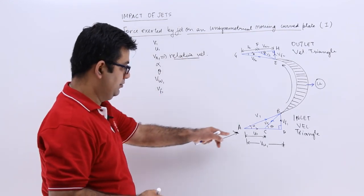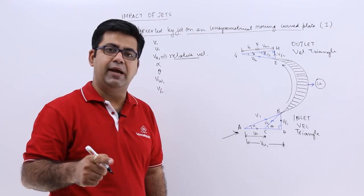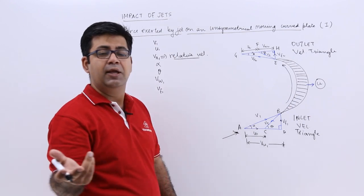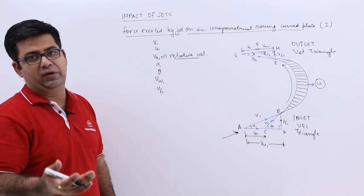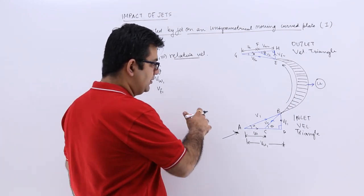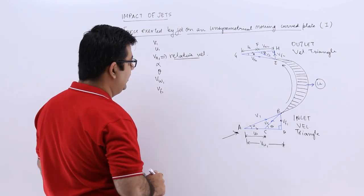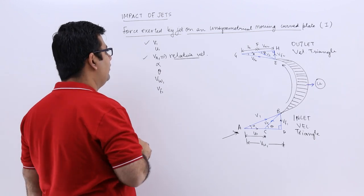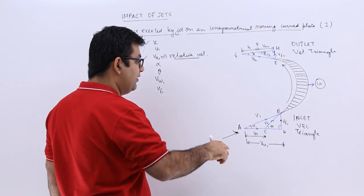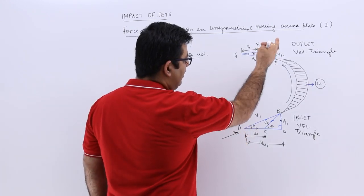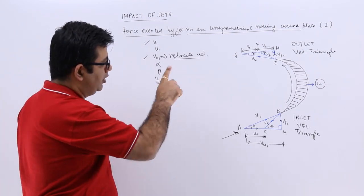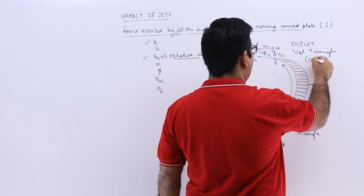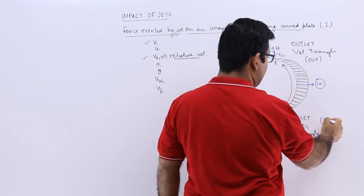U1 is the blade velocity at the inlet tip, and U2 is the blade velocity at the outlet. We have discussed the absolute velocity V1 and the relative velocity Vr1. Comparatively, you will have V2 on the outlet velocity triangle and Vr2 on the outlet velocity triangle as well. We can abbreviate the outlet velocity triangle as OVT and the inlet velocity triangle as IVT.